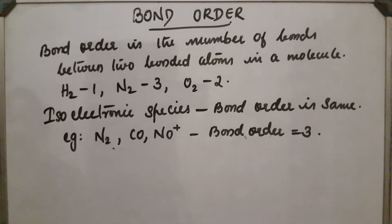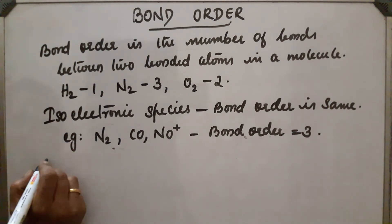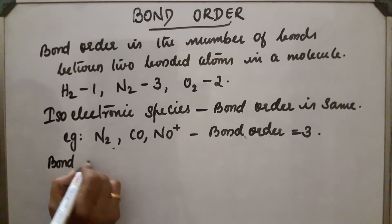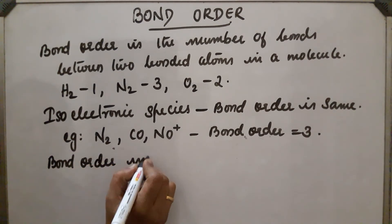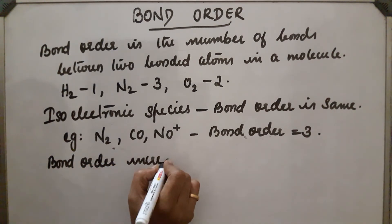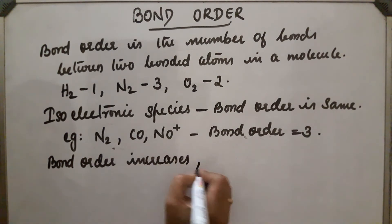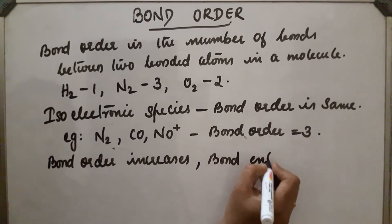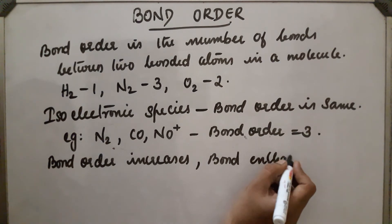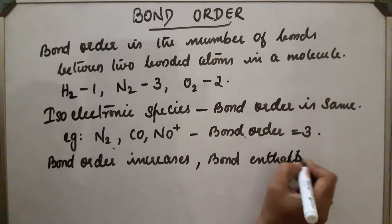In short, as bond order increases, bond enthalpy increases and bond length decreases. Bond order increases means the bond becomes stronger.